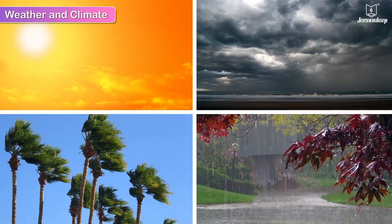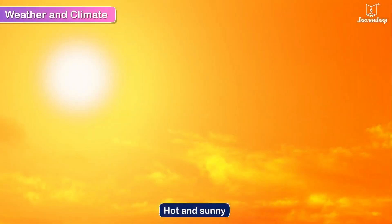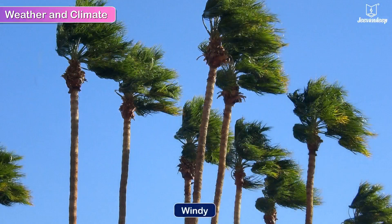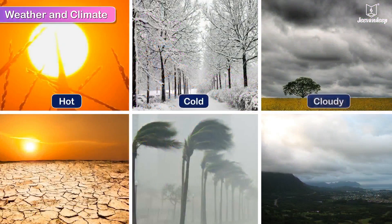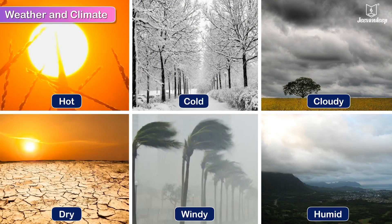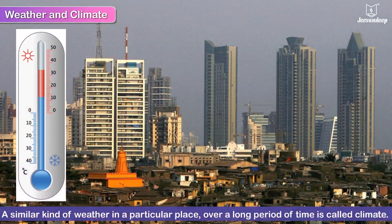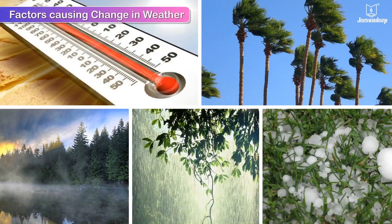Weather and climate: we experience weather changes frequently. Some days are hot and sunny, other days it may be a little cloudy or windy. Weather can be defined as the condition of the atmosphere at a particular place and time. The weather can be hot, cold, cloudy, dry, windy, or humid and generally keeps changing. A similar kind of weather in a particular place over a long period of time is called climate.